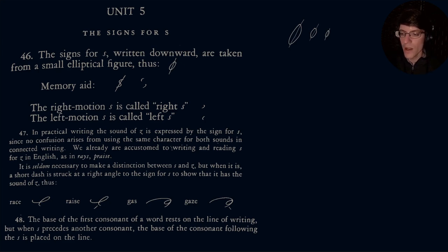In practical writing, the sound of Z is expressed by the sign for S, since no confusion arises from using the same character for both sounds in connected writing. We already are accustomed to writing and reading S for Z in English, such as raise and praise. And I guess you'd only ever see raise spelled with a Z if you're a rapper.